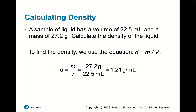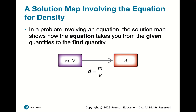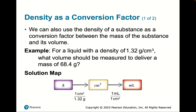To calculate density: take mass divided by volume. Note that cubic centimeter equals milliliter. If a liquid has a volume of 22.5 mL and a mass of 27.2 g, density = 27.2 ÷ 22.5. This is a 'plug and chug' problem — you just substitute into the equation and the answer comes right out.